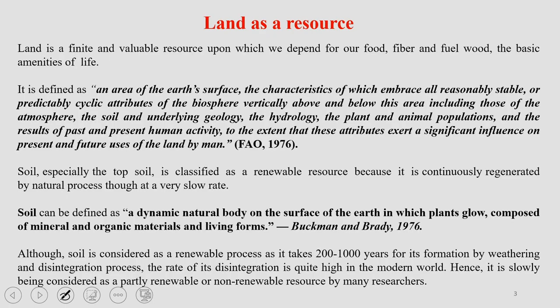Land is often defined as an area of the earth's surface, the characteristics of which embrace all reasonably stable, predictably cyclic attributes of the biosphere vertically above and below this area — including those of the atmosphere, the soil and underlying geology, the hydrology, the plant and animal populations, and the result of past and present human activity — to the extent that these attributes exert a significant influence on present and future uses of land by man. This is how the Food and Agriculture Organization (FAO) describes land.